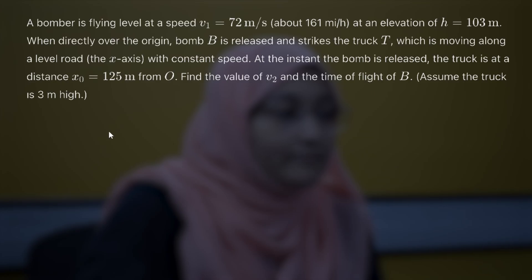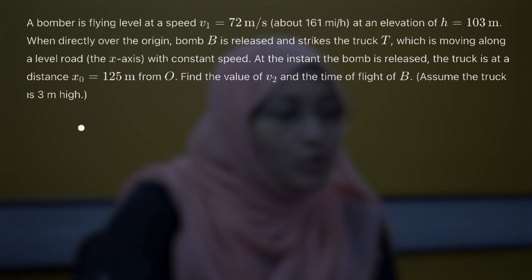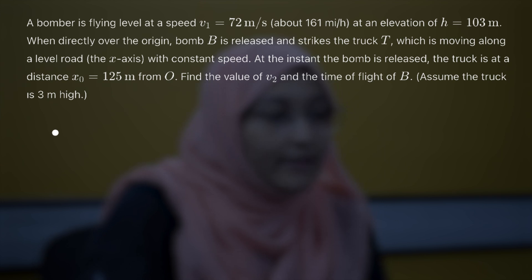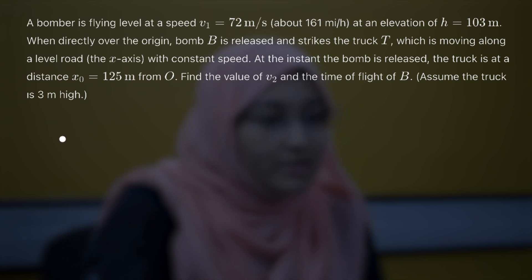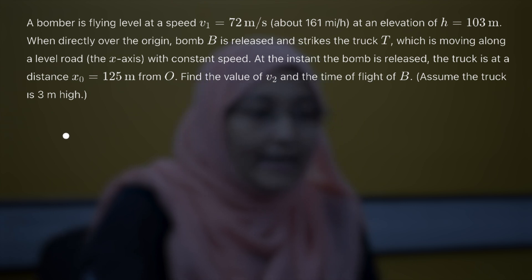So let's move to the problem and see what it says. Our problem says a bomber is flying level at a speed of 72 meters per second, about 161 miles per hour, at an elevation height of 103 meters.